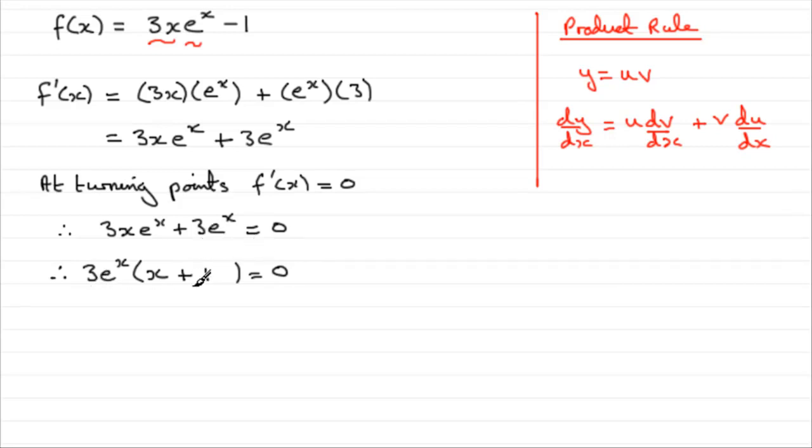Now, we've created one term here made up of three factors. The 3 is one factor, e to the x is the other factor, and x plus 1 is the third factor. And that means that any one of these factors could possibly equal 0.